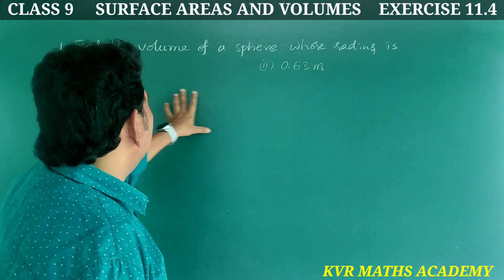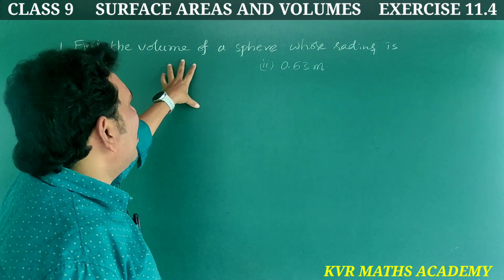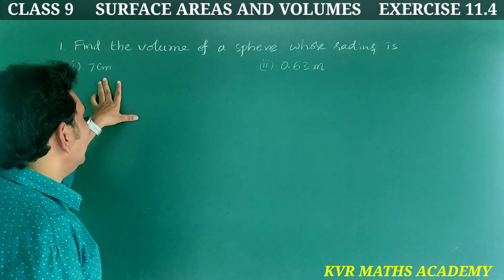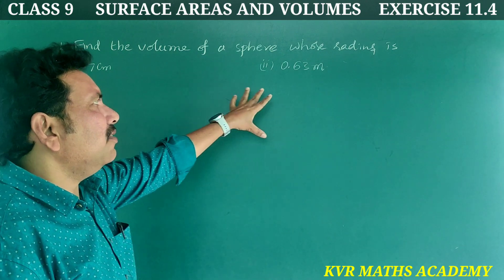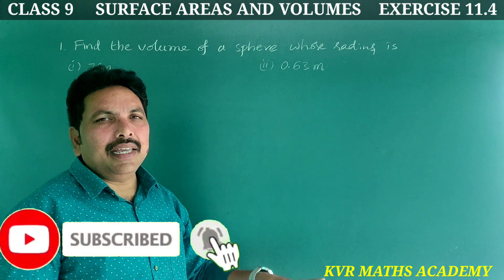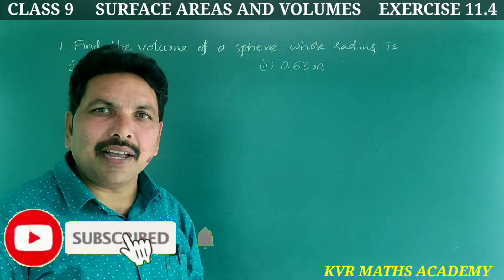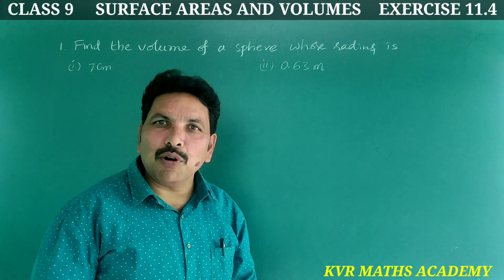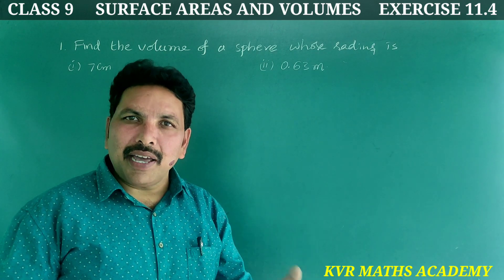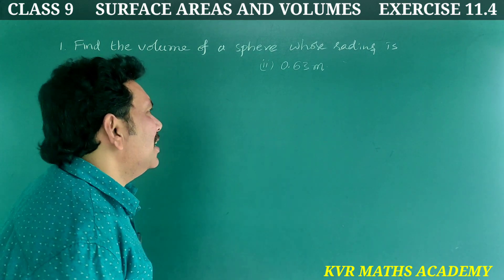First question: find the volume of a sphere whose radius is 7 centimeters, and second part, 0.63 meters. The formula for volume of a sphere is 4/3 × π × r³. We substitute the r value to find the volume.